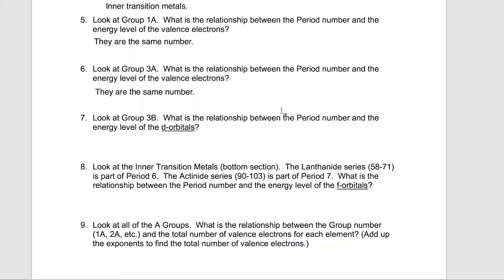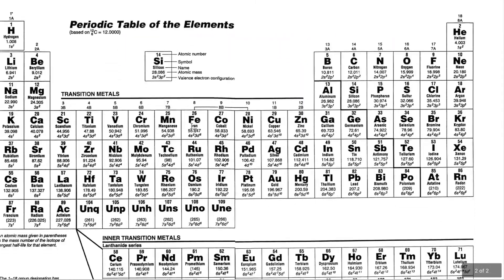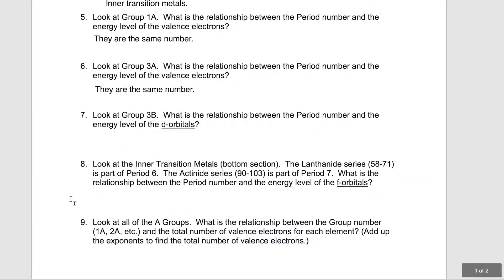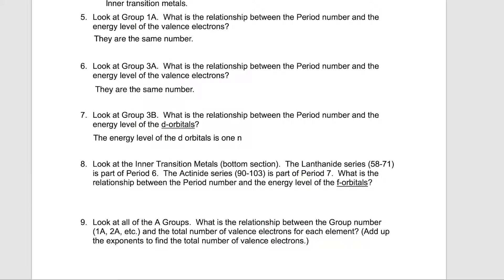Look at group 3B. What's the relationship between the period number and the energy level of the D orbitals? There's 3B — the energy level of the D orbitals is 3, but the period number is 4. Period number 6, D orbitals' energy level number is 5. Period number 7, D orbital energy level 6. So the energy level of the D orbitals lags 1 behind the period number — 1 less.